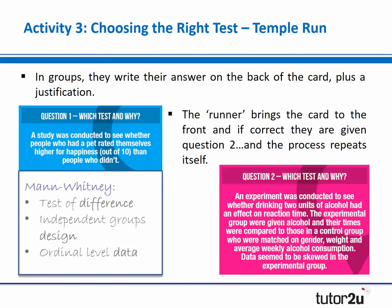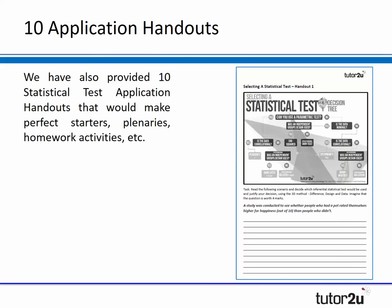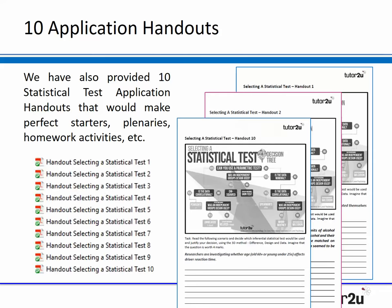The winning table is the one that answers all eight correctly the quickest. It gets really competitive — a really lively activity and a bit of fun to break up something like inferential tests, which doesn't always lend itself to being the most exciting of topics. One of the most important things for getting students to remember the inferential stats tests is to get them to practice, practice, practice with something like this.